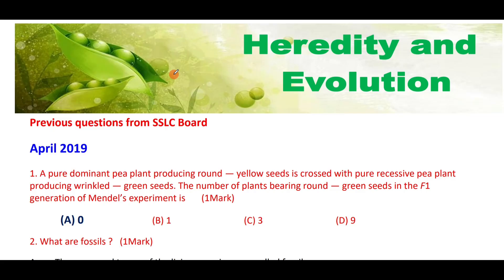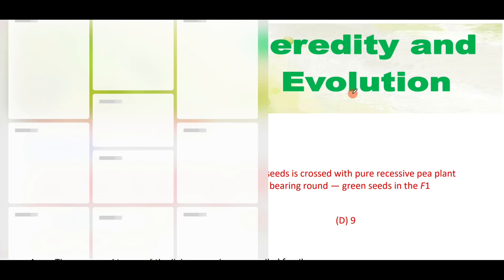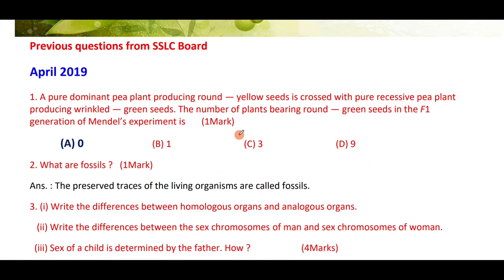Heredity and evolution is a very important chapter — definitely a four-mark question will be asked from this chapter. A pure dominant pea plant producing round yellow seeds is crossed with a pure recessive pea plant producing wrinkled green seeds. The number of plants bearing round green seeds in the F1 generation will be zero, because only the dominant trait will be produced in the F1 generation.